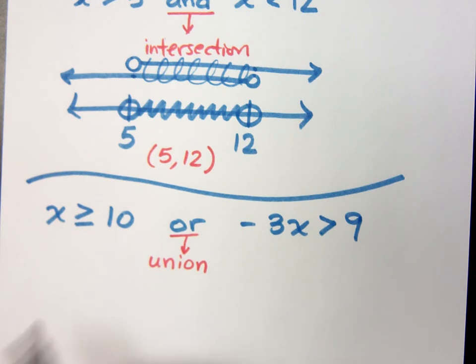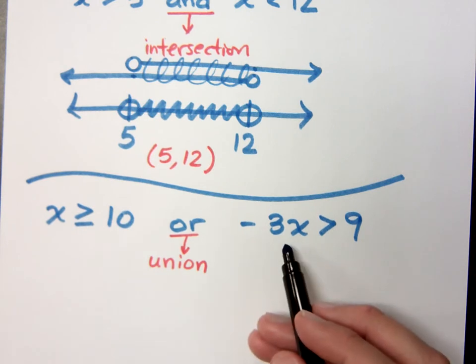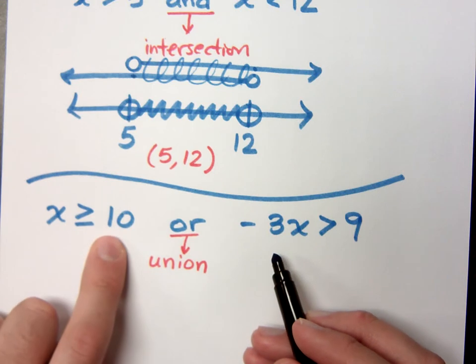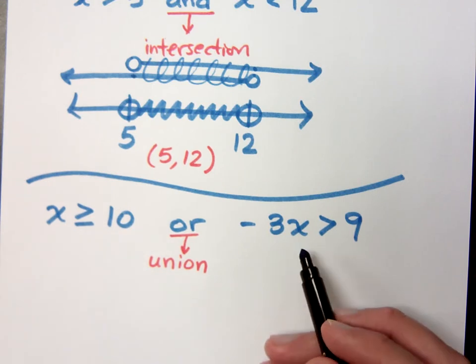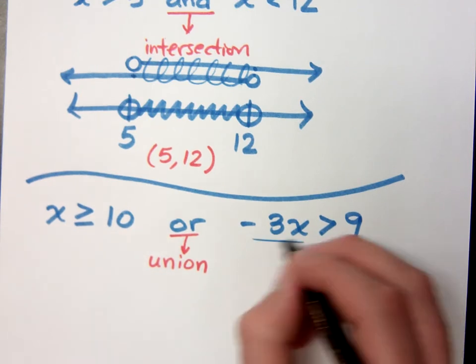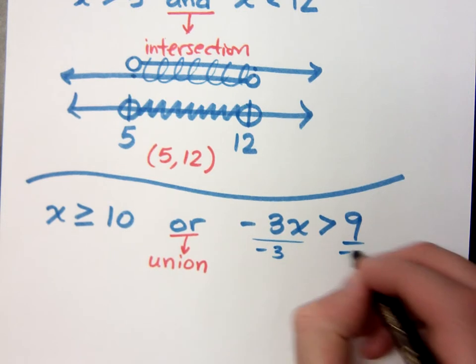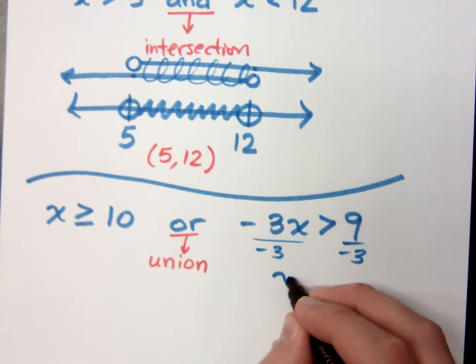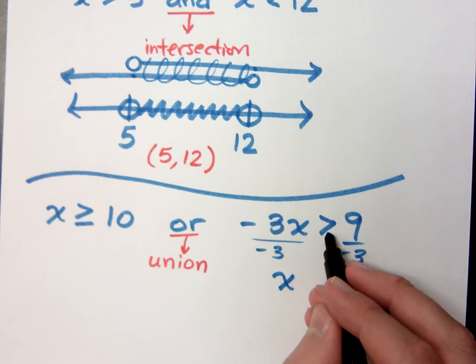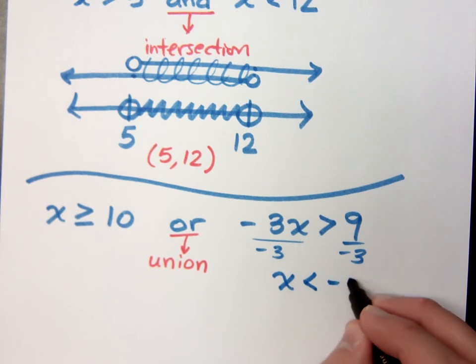Now, before I can do this, though, I've got to take care of this guy. See, x is greater than or equal to 10 is fine. He's solved for x, but this guy's not. So, if I just quickly divide both sides by negative 3, I get that x is, watch out here, this is less than negative 3.